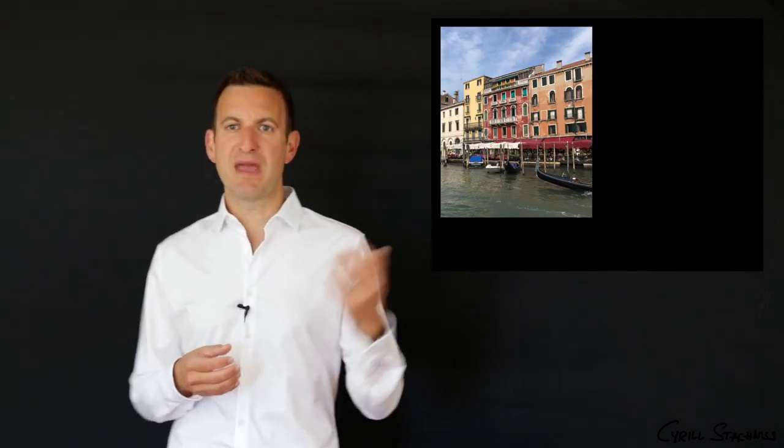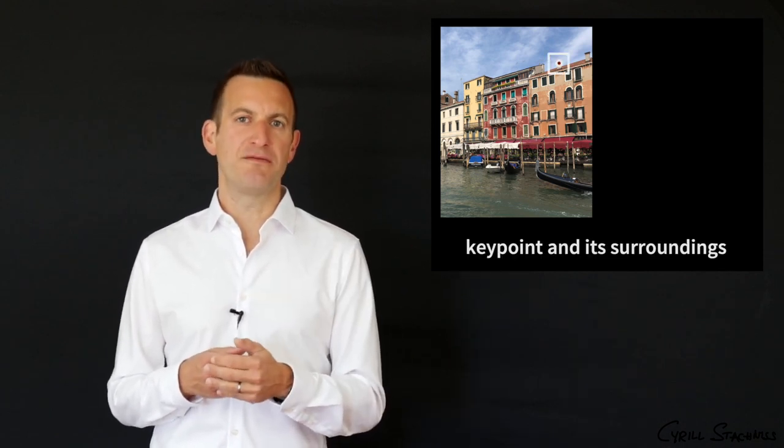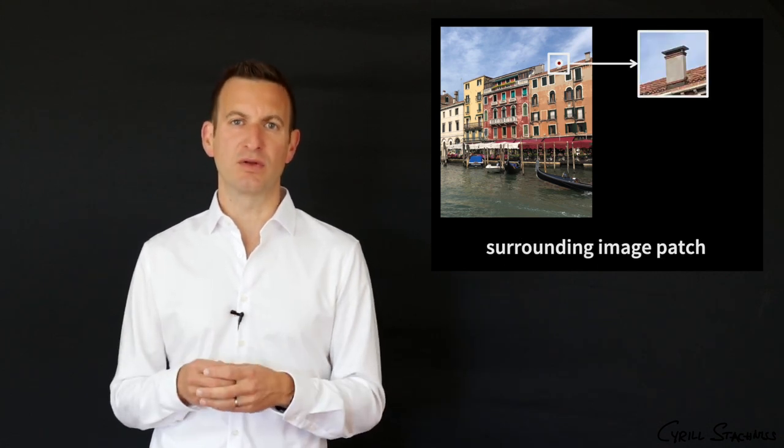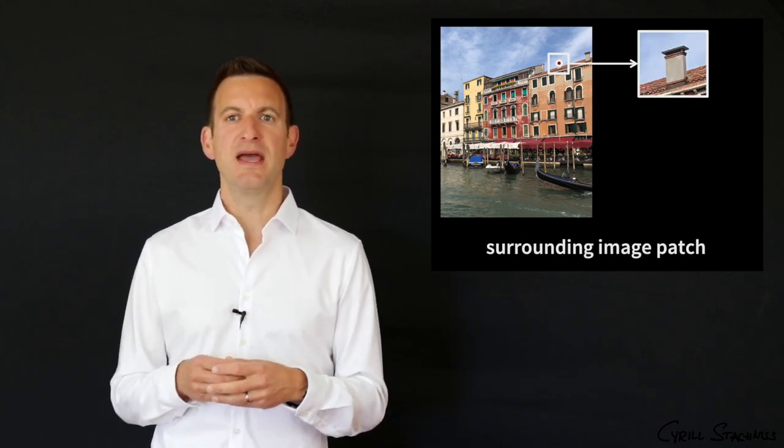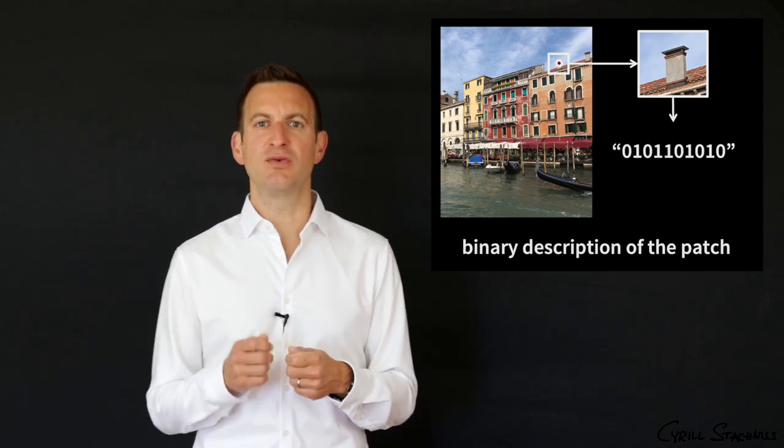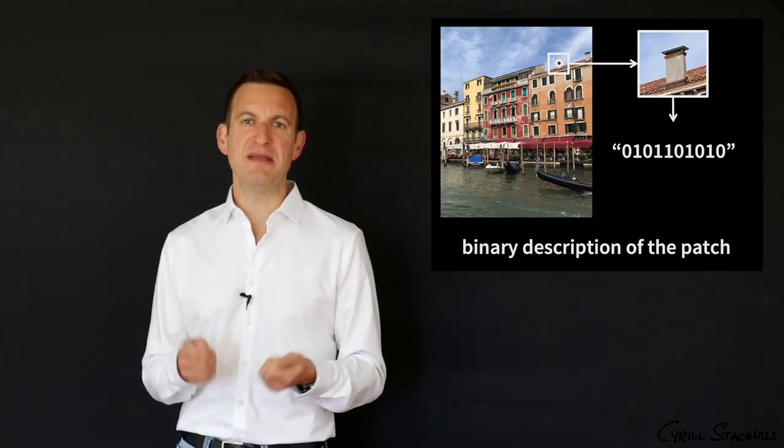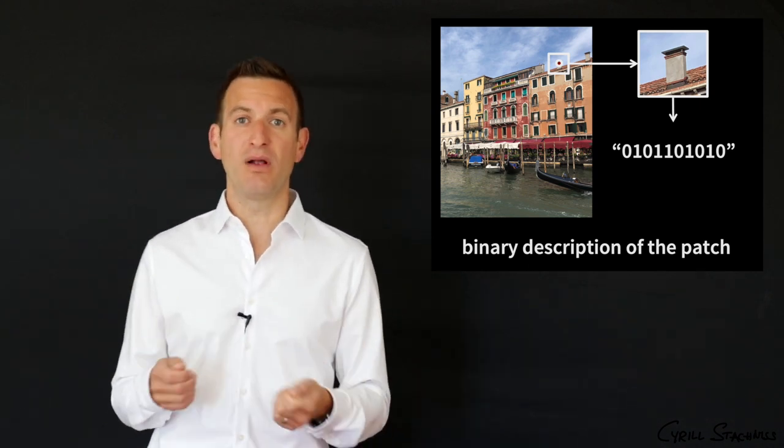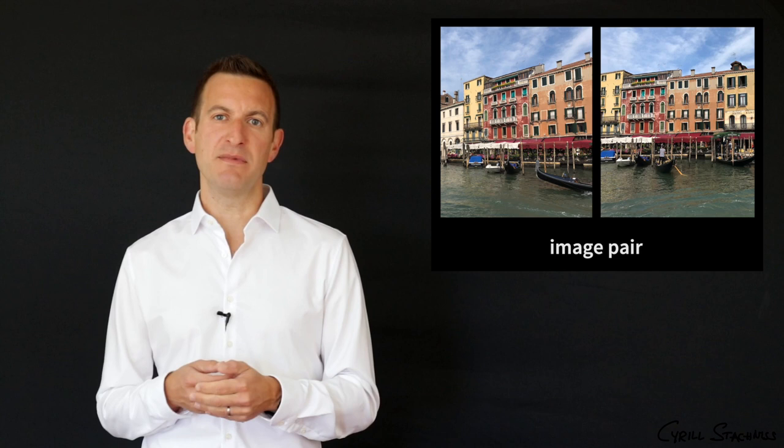So let's have a small example where we have one image like the image here from Venice and we want to compute the binary descriptor of a local image point like the chimney point over here. So we extract a local neighborhood out of that image and then want to turn this image into a signature of bits, of zeros and ones.